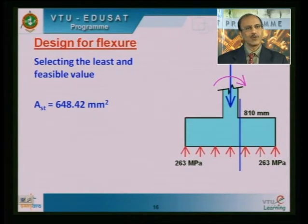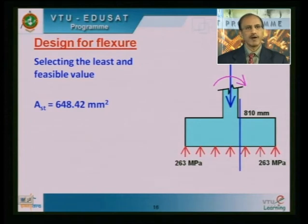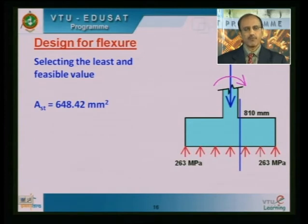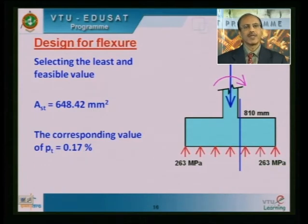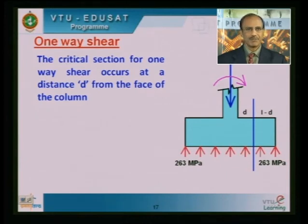Having obtained Ast = 648.42 mm², we can convert it to percentage of steel: Pt = (Ast / (B × d)) × 100. With B = 1000 mm and d = 382 mm, Pt = 0.17 percent. Having completed the flexure design, the next part is the one-way shear check.